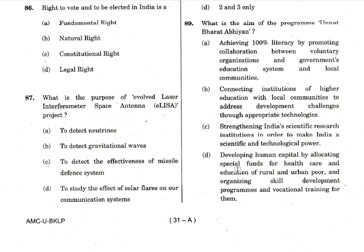Question 89 is about Unnat Bharat Abhiyan. Option A — achieving 100% literacy by promoting collaboration between voluntary organizations — is not accurate. Option B — connecting institutions of higher education with local communities to address developmental challenges through appropriate technology — is the correct objective. Option C about strengthening scientific research institutions is some other scheme. Option D about developing human capital through healthcare, education and skill development combines many other schemes. Unnat Bharat Abhiyan is about education by connecting higher institutes with local communities. Answer is option B.